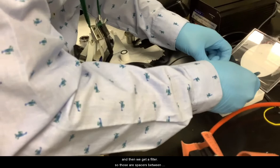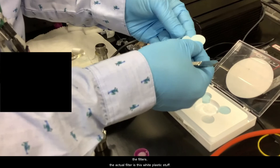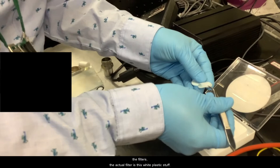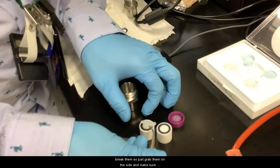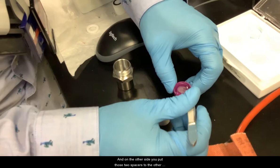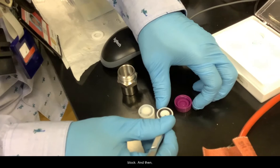Then we get a filter. Those are spacers between the filters. The actual filter is this white plustrekey. Don't grab them in the center because you could break them. Just grab them on the side and make sure they're centered on this piece.